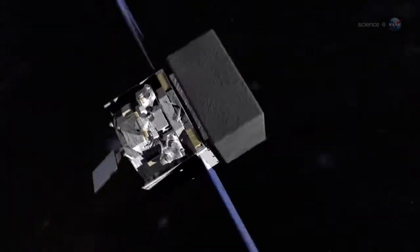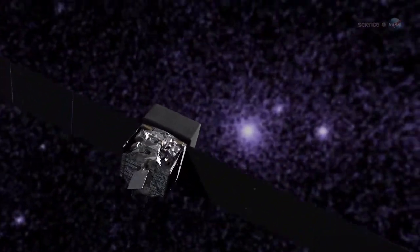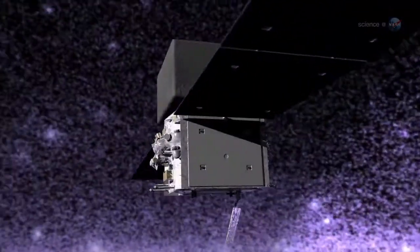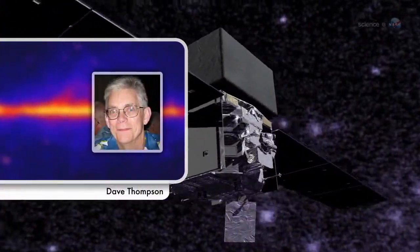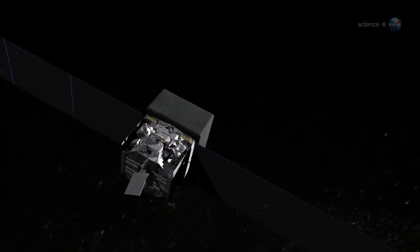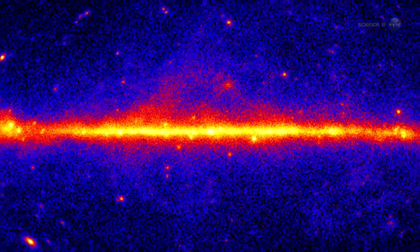One of them, the Fermi Gamma-Ray Telescope orbiting Earth, has just crossed a new electromagnetic frontier. Fermi is picking up crazy energetic photons, says Dave Thompson, an astrophysicist at NASA's Goddard Space Flight Center. And it's detecting so many of them, we've been able to produce the first all-sky map of the very high-energy universe.